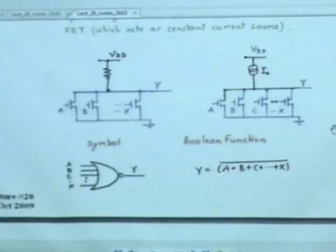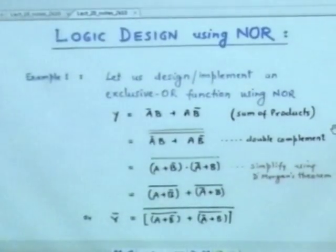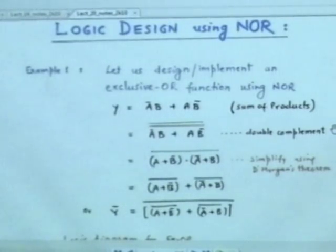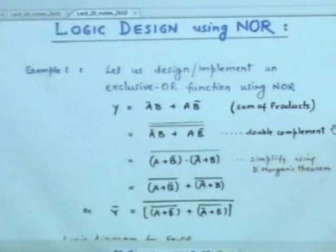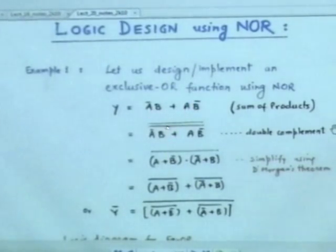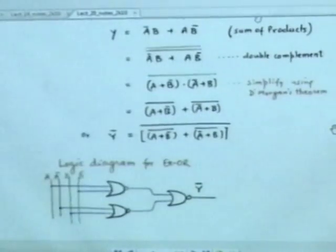Now I can get a NOR of any number of things. Logic design using NOR: any sum of products — you give me any function in sum-of-products form — I can always implement it using NORs, provable by De Morgan's theorem. For example, the exclusive-OR function A-bar·B + A·B-bar: we apply double negation, simplify inside, and get NOR-based expressions. This is just to prove that any sum of products can be converted to functions of NORs.